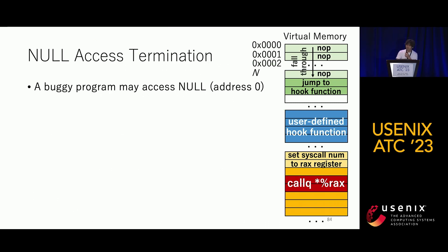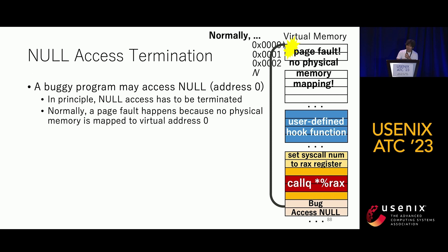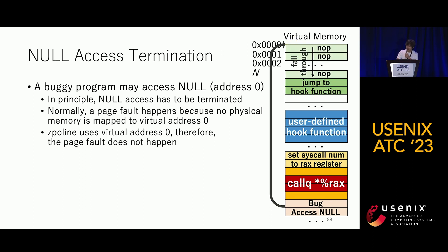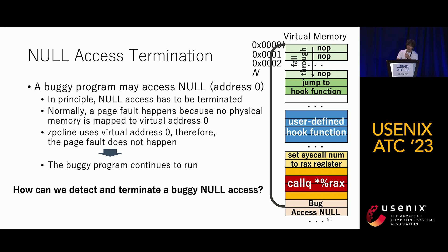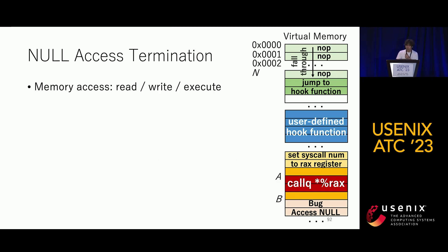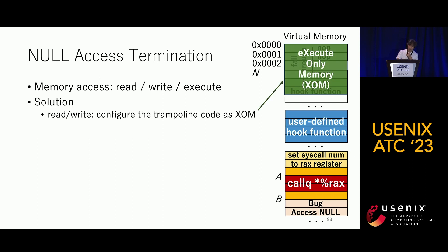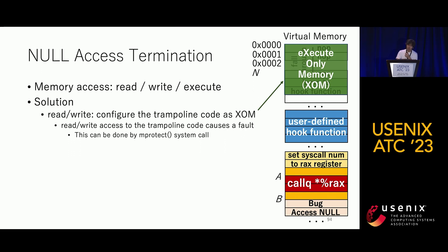One thing we need to address is null access termination, because a buggy program may access null. Normally, a page fault happens because no physical memory is mapped to address zero. But since we use address zero for our trampoline, the page fault doesn't happen, meaning a buggy program can continue to run. For read and write null access, we configure the trampoline code as XOM — execute-only memory — so that read or write access to the trampoline code causes a fault. This configuration is done via the mprotect system call.